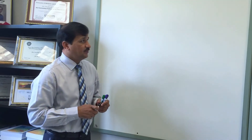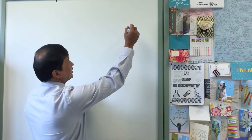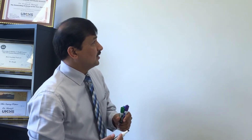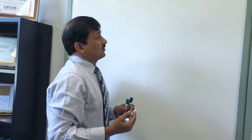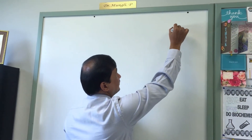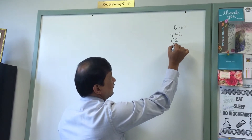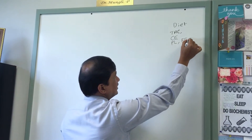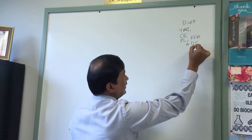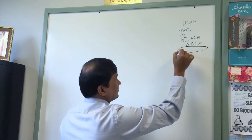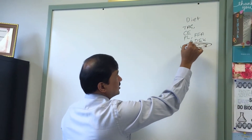Let me begin lipoprotein metabolism with the digestion and absorption of lipids. I have a separate video on this topic, so I'll be brief here. The diet contains triacylglycerol, cholesterol ester, phospholipid, free fatty acids, and fat-soluble vitamins A, D, E, and K. These are absorbed in the brush border epithelium of the intestine.